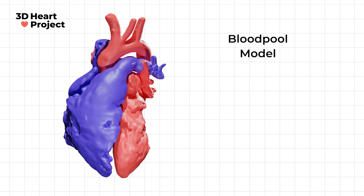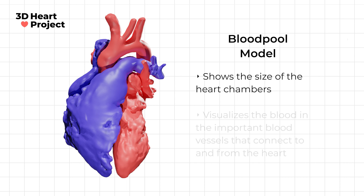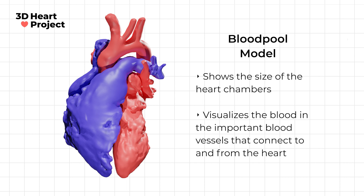This type of model is used to show what the blood inside the heart chambers looks like, which gives a clear idea of the size of each part of the heart. We can also see the blood in the important blood vessels that connect to and from the heart.